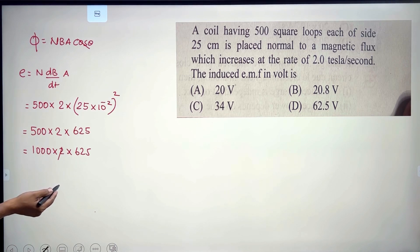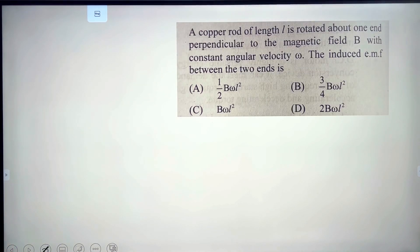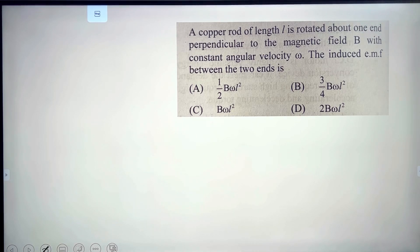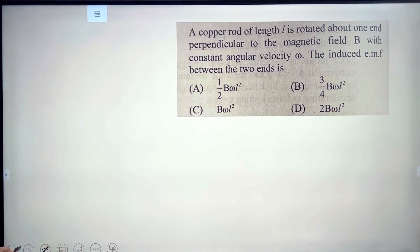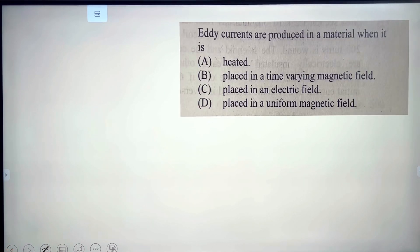Next problem: a copper rod of length L is rotated about one end perpendicular to a magnetic field with constant angular velocity. The induced EMF between the two ends, by derivation, gives the answer as ½·B·ω·L². The correct option is A.